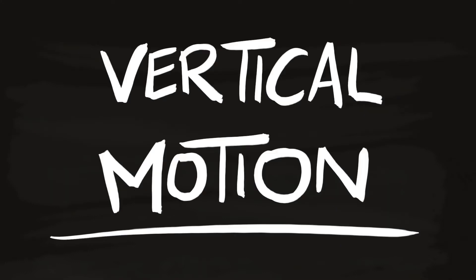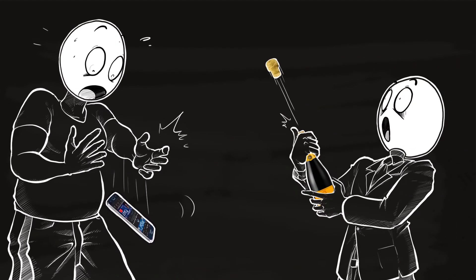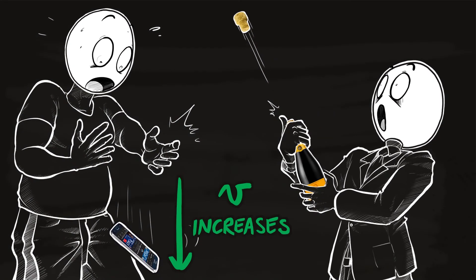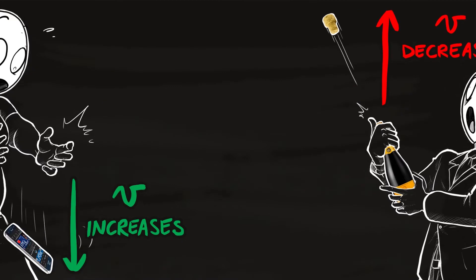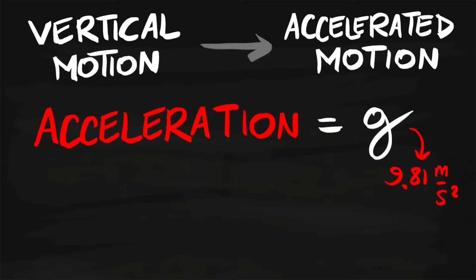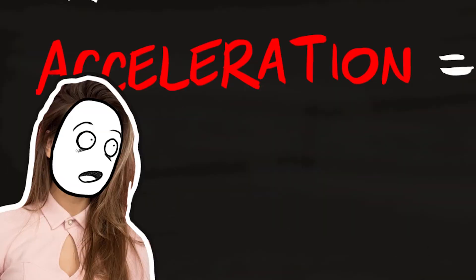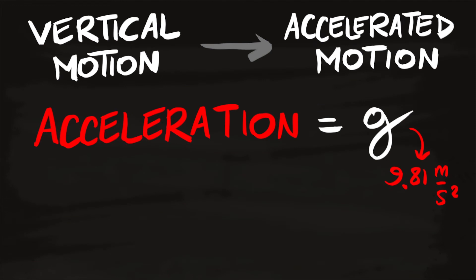When you drop your phone or throw something in the air, you're dealing with accelerated motion because speed changes. Vertical motion of objects is an accelerated motion. The cool thing is you don't have to come up with the acceleration value — it's always the same: g, 9.81 meters per second squared. This is the same g used to calculate gravitational force, also known as gravity acceleration.